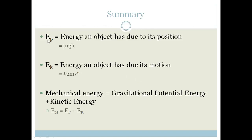We've learned that potential energy is the energy an object has due to its position. And the equation for that is mgh, where m stands for mass, g stands for acceleration due to gravity, and h is the height of the object. Then we have kinetic energy, which is the energy an object has due to its motion, which equals a half times mass times velocity squared.